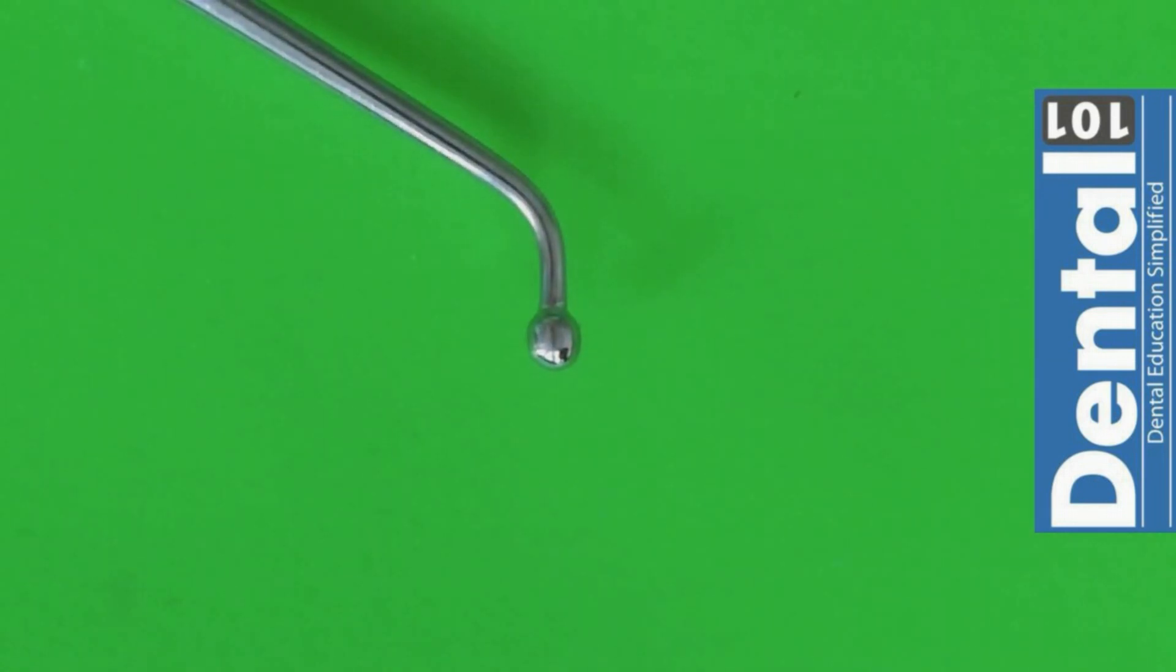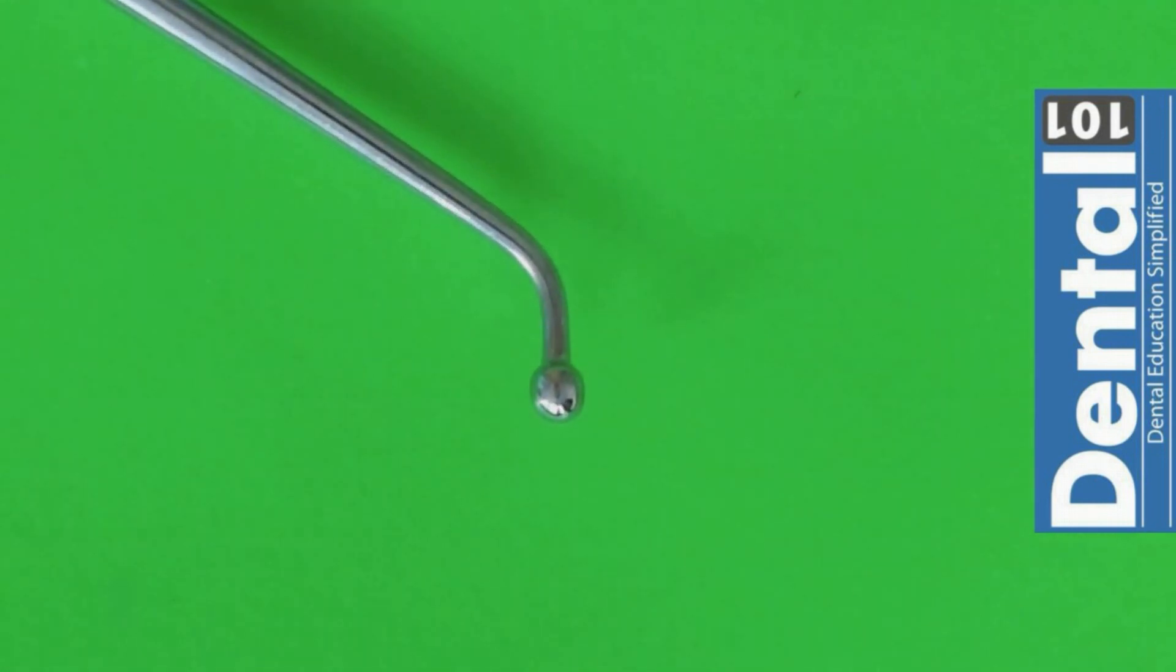Here we have the ball burnisher. You have two working ends. One ball is going to be longer or bigger than the other one. The use of the ball burnisher is to ensure that the margins of the amalgam are adapting quite well. Also you can use this one to smooth the amalgam after you have condensed it. And remember that we also use the ball burnisher when we are placing our matrix band so we can contour the matrix band in the interproximal surface.